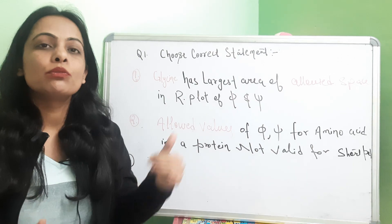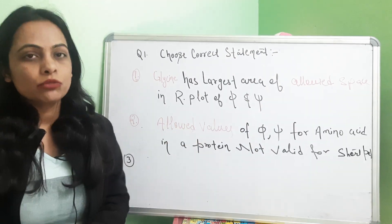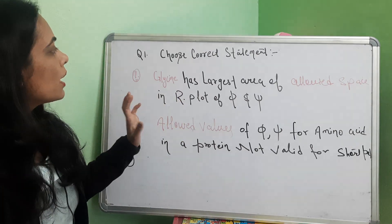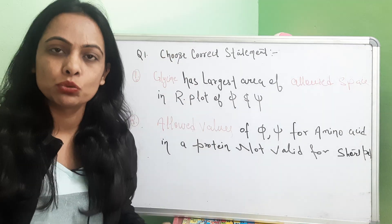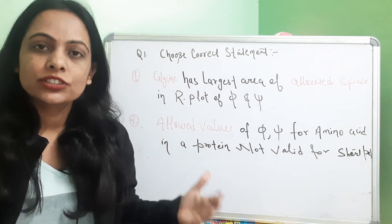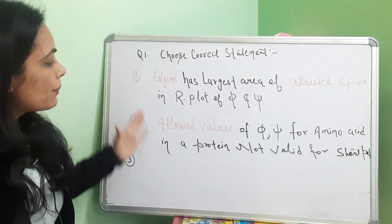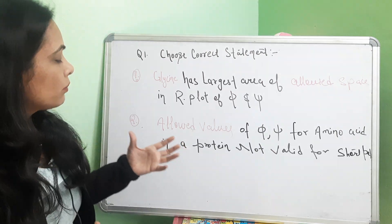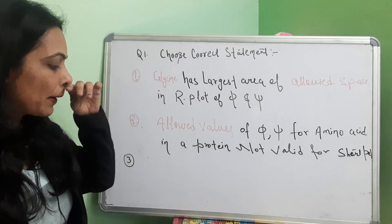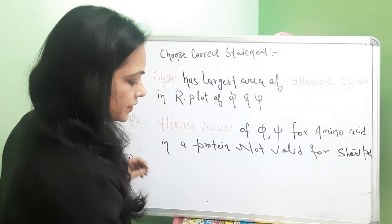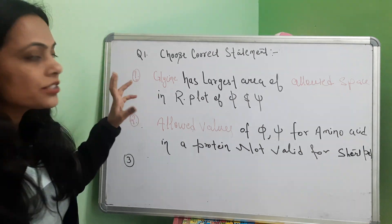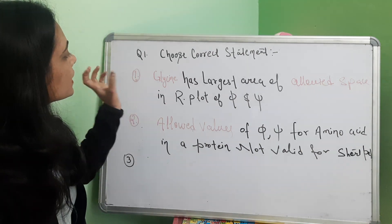Let's start with the first question. We have to choose the correct statement. The statements given are related to protein structure and are based on the Ramachandran plot. We need to choose only the correct statement. Statement B says that glycine has the largest area of allowed space in the Ramachandran plot of phi and psi values.